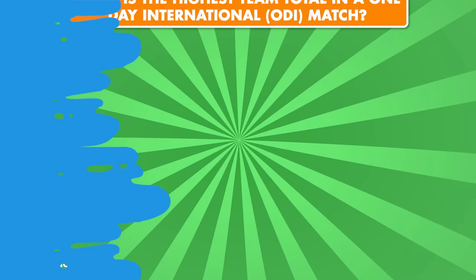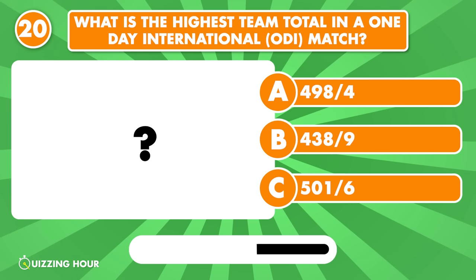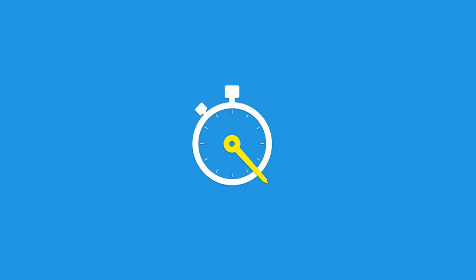What is the highest team total in a One-Day International match? 498 for 4 by England. How many did you get? Comment your score below, and make sure to like, share, and subscribe.